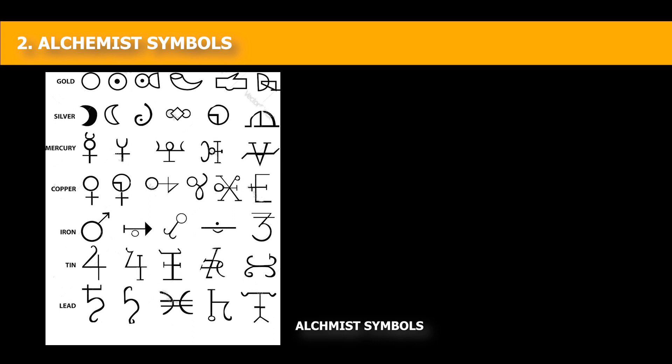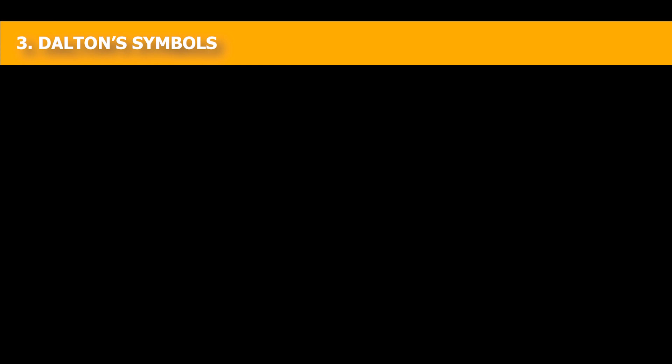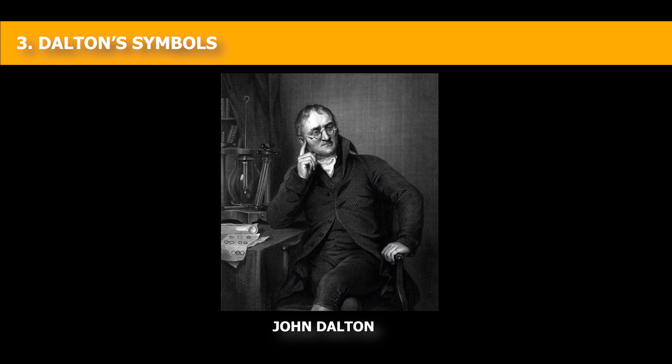3. Dalton's Symbol. With the progress in science, scientists started discovering new type of elements. In 1808, John Dalton, an English scientist, tried to name the various elements based on pictorial symbols.